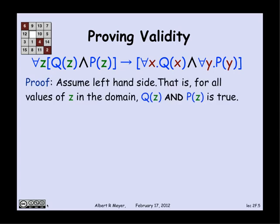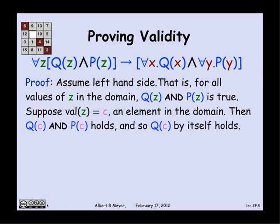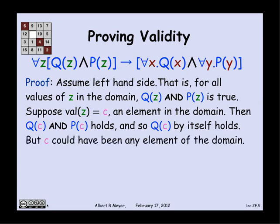Here's the formula written with concise mathematical symbols. The upside-down v means and, and the arrow means implies. We want to try to prove that this is valid a little bit more carefully. The strategy is to assume that the left-hand side holds. It says that for every z, q of z holds and p of z holds. That means that for every possible environment that assigns a value to z, q of z and p of z both come out to be true. Suppose that the environment assigns the value c to z, where c is some element of the domain. Then what this means is that in that environment q of c and p of c holds. But q of c holds, so q of c certainly holds, and p of c holds, so q of c certainly holds all by itself.